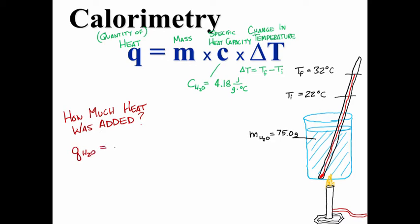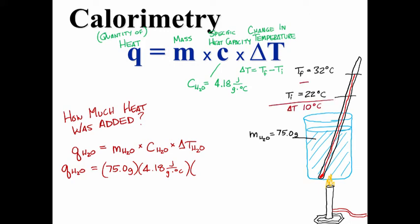To figure this out, we must find q for the water, which equals m of the water times c of the water times delta t of the water. Or 75 grams times 4.18 joules per gram degree Celsius times the temperature change, which is 32 degrees minus 22 degrees, or 10 degrees Celsius. So the heat gained by the water is 3,135. And canceling the units reveals that our answer is measured in joules. With proper significant digits, this is 3,100 joules. Notice this is a positive number, which means the water gained energy.